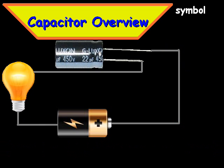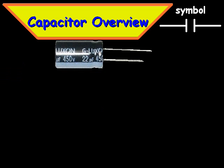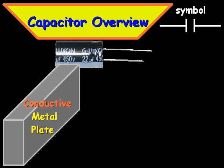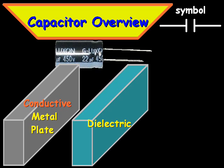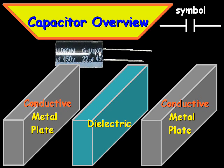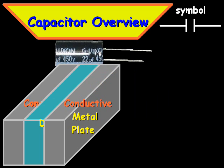Now the electrical symbol for a capacitor is just two lines like that, and we'll show why in just a second. Basically the makeup is a conductive metal plate, then a dielectric or insulator in between, and then another conductive metal plate — put those together and that's your basic capacitor.